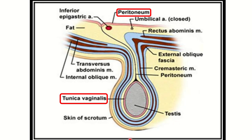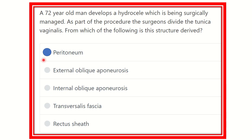So tunica vaginalis is derived from the peritoneum. In the second picture we can also see the layers of the scrotum, and again the tunica vaginalis is shown deriving from the peritoneum. Therefore, our final answer is the peritoneum — the tunica vaginalis of the testes, which is a layer of the scrotum, is derived from the peritoneum. Thank you.